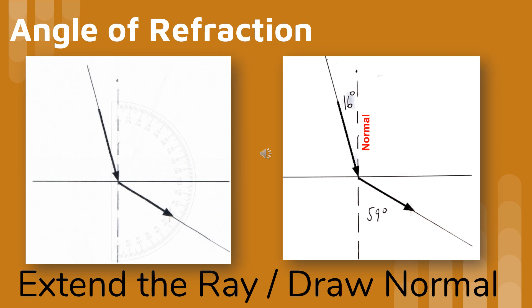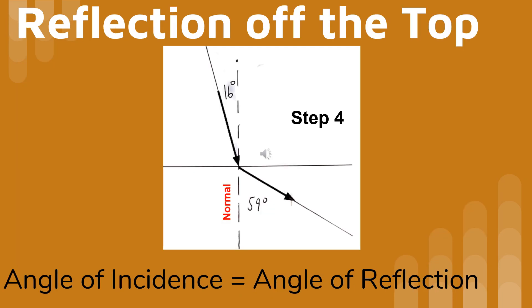To measure the angle of refraction, we point the curve of the protractor to the right, the zero line on the normal, and the center of the protractor where the ray hits the refracting surface. Whenever there is refraction at a boundary, there is always reflection. The reflection always occurs inside the first medium.